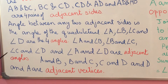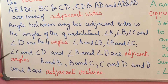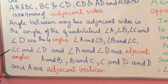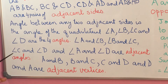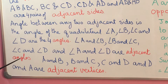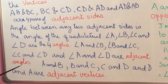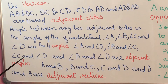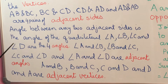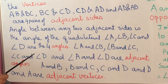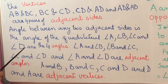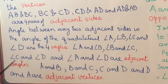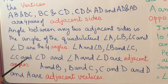Now let's see what the adjacent angles are. Angle A and angle B are next to each other, so they are adjacent angles. Similarly, B and C are adjacent angles, C and D are adjacent angles, and angle A and angle D are also adjacent angles. So a quadrilateral has four pairs of adjacent angles.